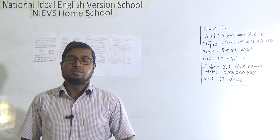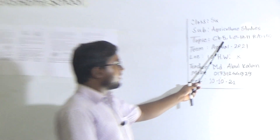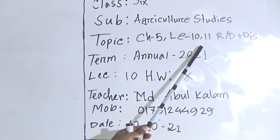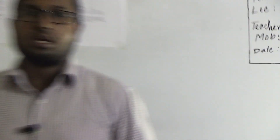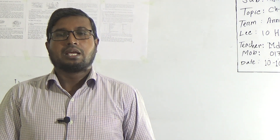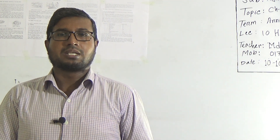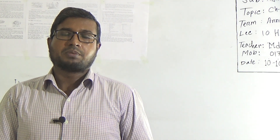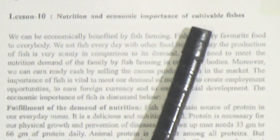Dear learners, today I am going to conduct an agriculture studies class for the students of classics. Let's look at the book to understand our selected topic. It is Chapter 5, Lesson Number 10 and 11 — Reading plus Discussion — and this is our Lecture Number 10. Open your agriculture studies book, page number 75. Lesson 10 is titled 'Nutrition and Economic Importance of Cultivable Fishes.'